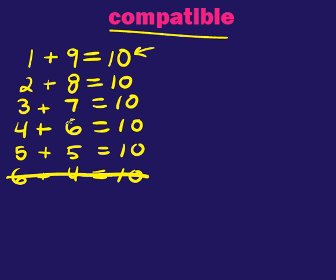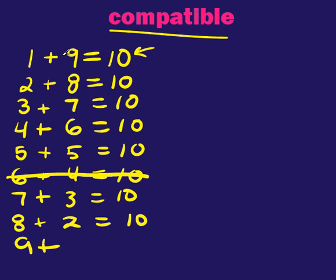4 plus 6, 3 plus 7. We could go 7 plus 3 equals 10. 8 plus 2 equals 10. And we're going to end up at 9 plus, you guessed it, 1 equals 10. So those are compatible.